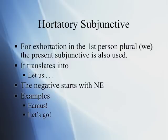The hortatory subjunctive does the exact same thing — it just has a different name when the order pertains to the first person plural: we. The present subjunctive is also used for that, and since we are dealing with an order to us, the translation goes well with 'let us.' The negative also starts with 'ne' plus the present subjunctive. For example, when the Romans would say 'let's go,' they would use the verb 'ire' in the present subjunctive first person plural: 'eamus' — let's go.